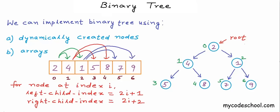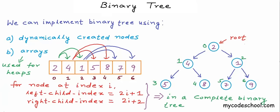We will discuss array implementation in detail when we talk about a special kind of binary tree called heap, since arrays are used to implement heaps. In our next lesson, we will talk about binary search tree, which is a special kind of binary tree that gives us a really efficient structure in which we can search and update data quickly. Thanks for watching.